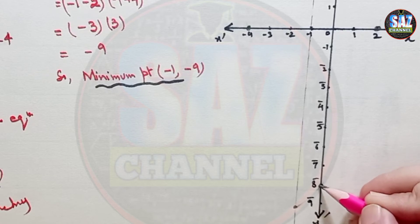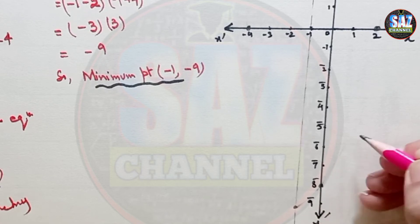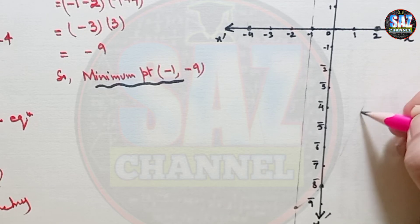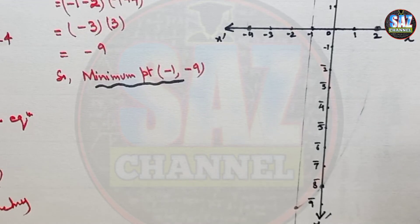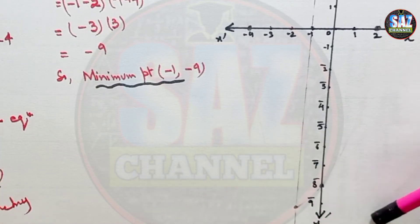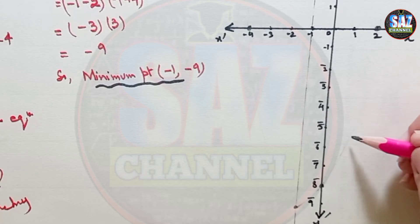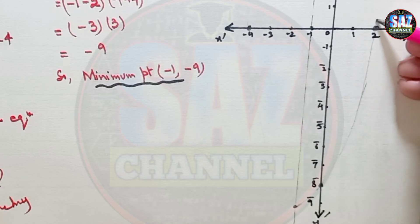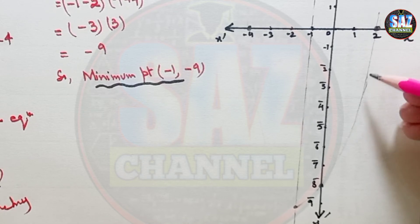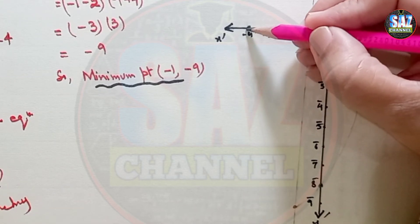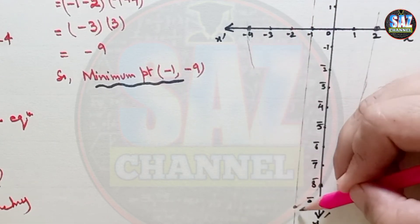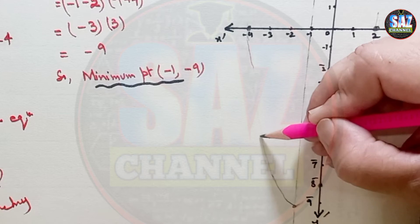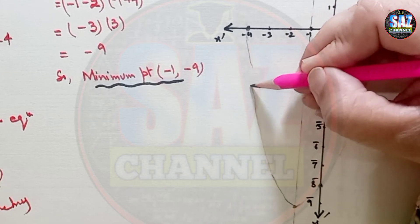Keep in mind that this curve will have opening upward, because the coefficient of the square term is positive. Join the points smoothly and nicely to give a smooth U-shaped curve, because a parabola is a smooth U-shaped curve opening either upward or downward depending on the sign of the coefficient of the square term.